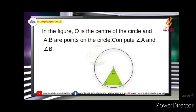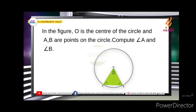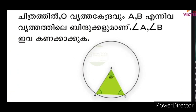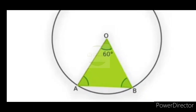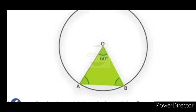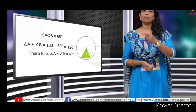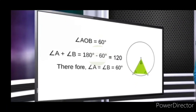O is the center of the circle, and A and B are points on the circle. Compute angle A and angle B. OA and OB are both radii, so they are equal. Since OA equals OB, angle A equals angle B. The angle is 80 degrees. If 80 degrees are points on the circle and 120 degrees, the angle A is equal to angle B, which equals 60 degrees.